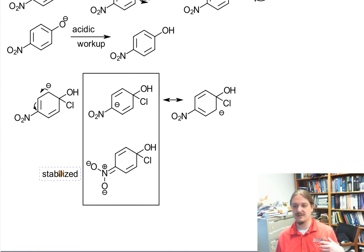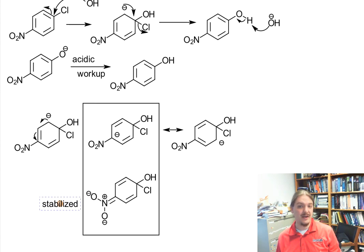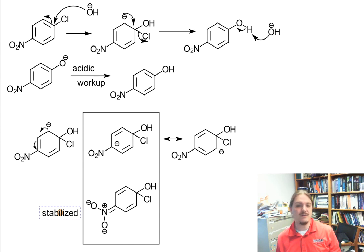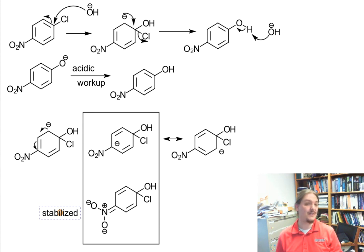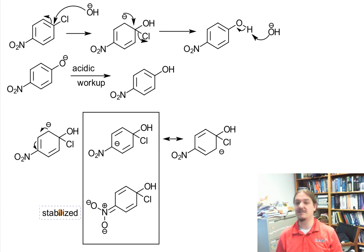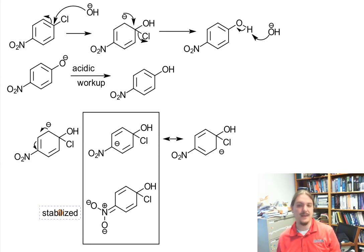So this video summarizes the addition-elimination, or so-called SNAr, mechanism, and it requires an electron withdrawing group ortho or para. When there's not an electron withdrawing group ortho or para, the reaction is slower and requires much higher temperature. In the next video we're going to explore that it has unexpected regiochemical outcomes. This variation puts the nucleophile where the leaving group is, which is useful. Thank you for watching.